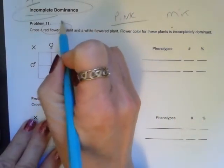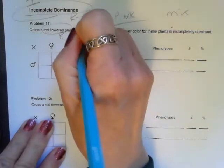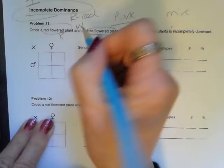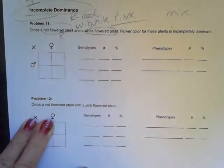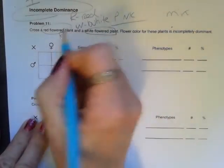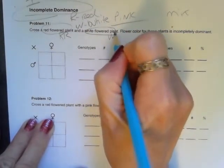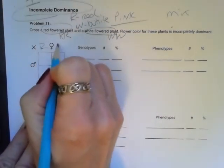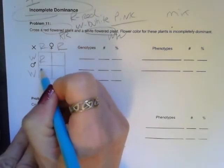So this one here, we've got a red flower — let's make the allele for red R — and a white flower, let's make that a W. It really doesn't matter how you do it; you could make it a little r. So a red flower is going to be big R, big R. A white flower is going to be W, W.